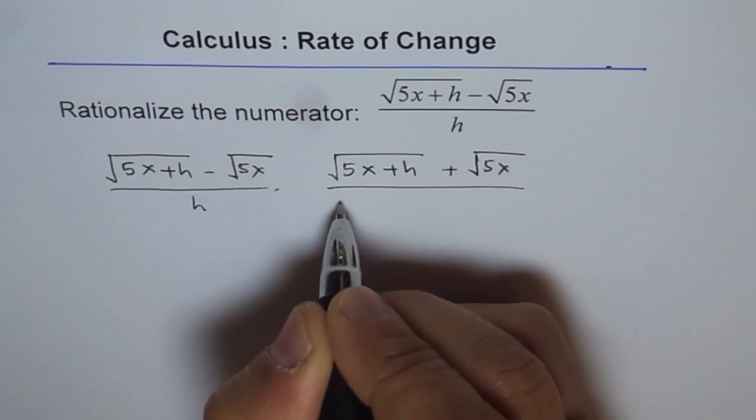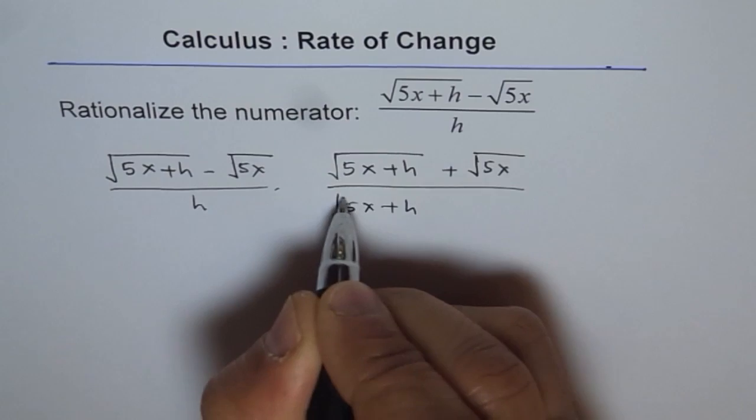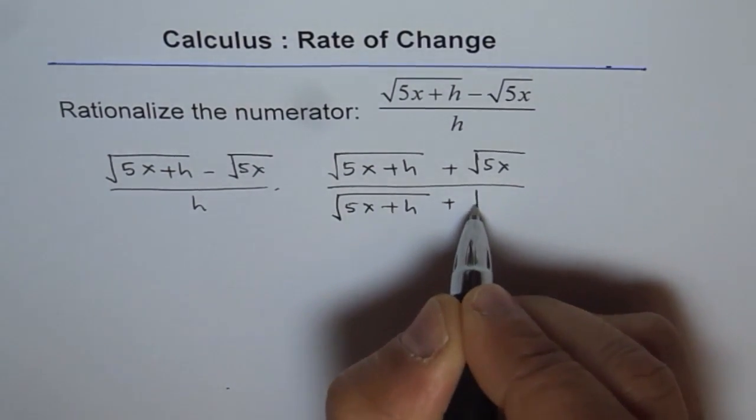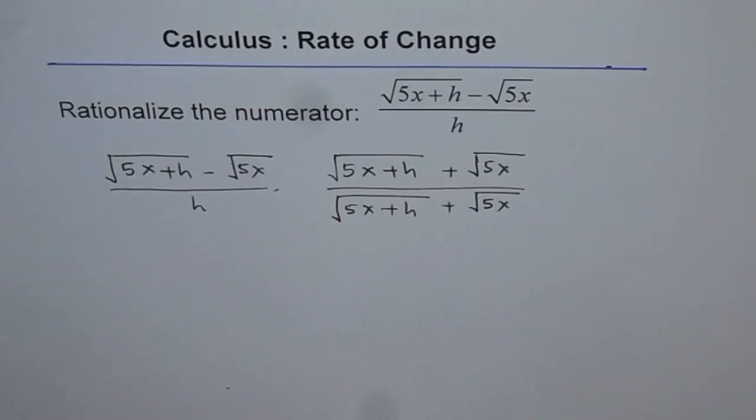Divided by the same thing, square root of 5x plus h plus square root of 5x. That is the conjugate.